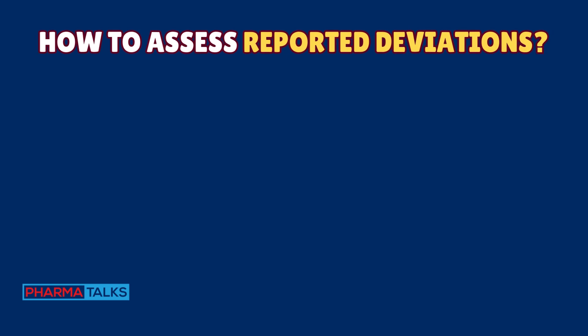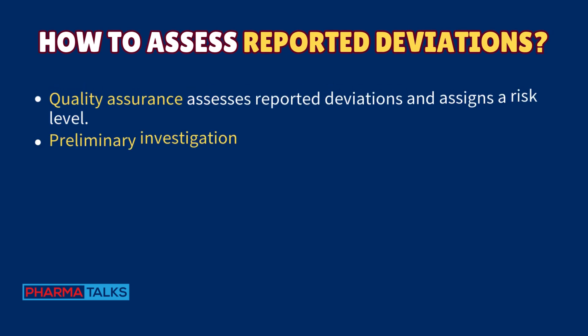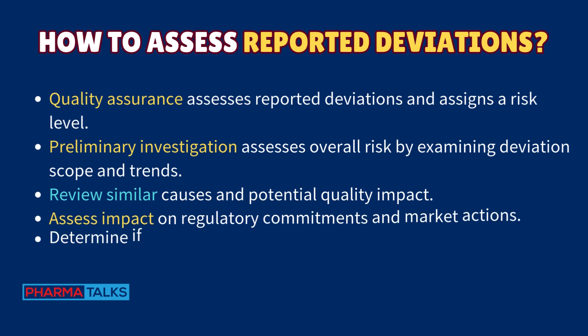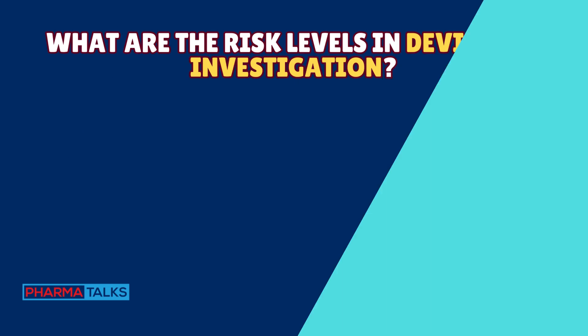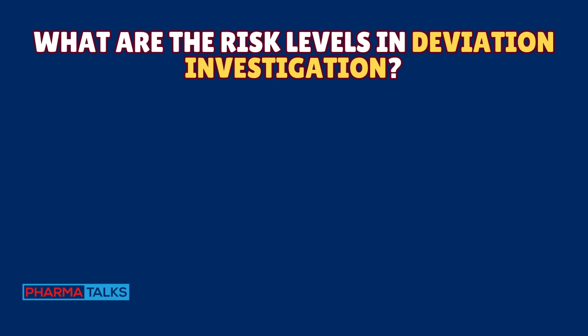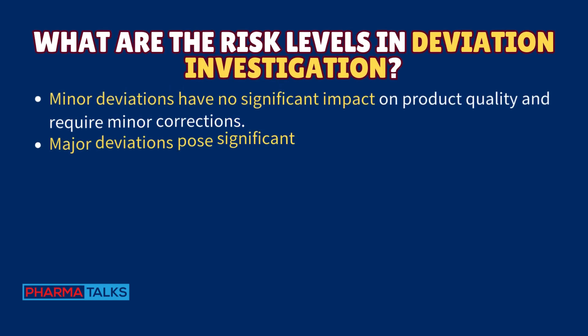Quality assurance assesses reported deviations and assigns a risk level. The preliminary investigation assesses overall risk by examining deviation scope and trends. Review similar causes and potential quality impact, assess impact on regulatory commitments and market actions, and determine if further investigation is needed based on the risk assessment.